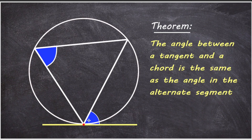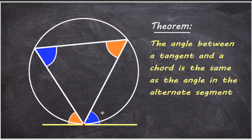This is also true for the left-hand side chord and the left side of the tangent. There's an angle between the chord and tangent, and in the alternate segment an angle is created at the circumference. According to the theorem, those angles are equal. In this video, we set out to prove that this must be true.